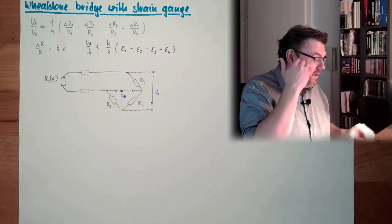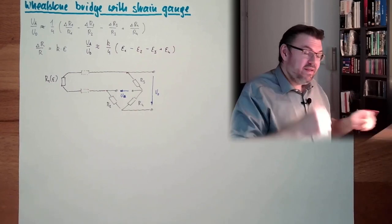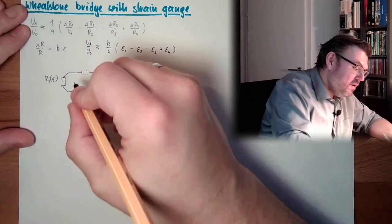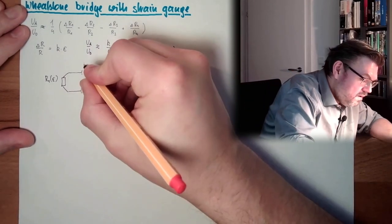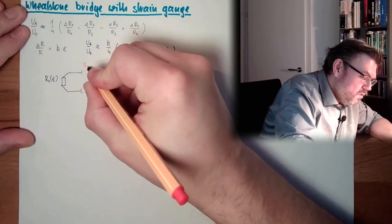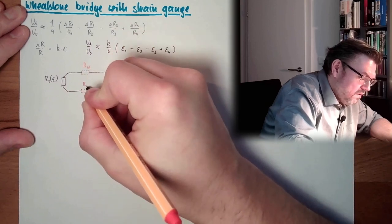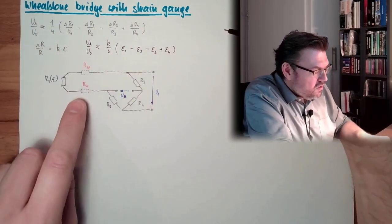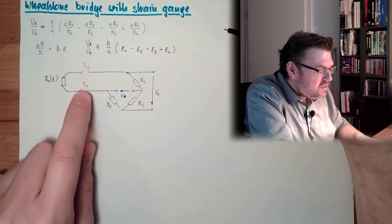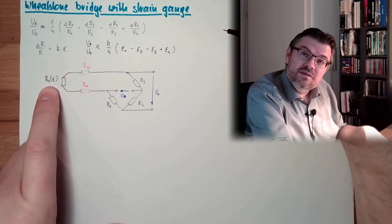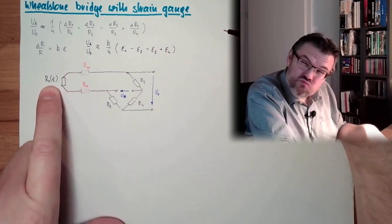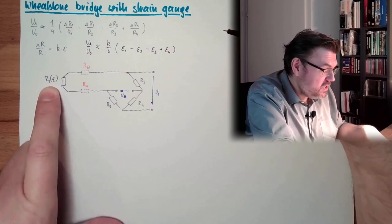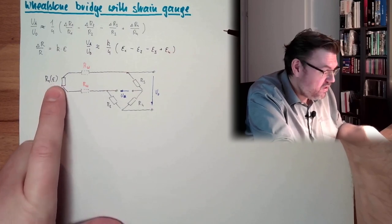But problem — it is not only reflecting the strain of the strain gauge. Here we have wire resistors, Rw. Those wire resistors already change the resistance value even if there is no strain at all.